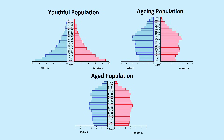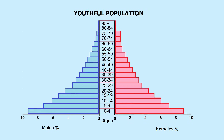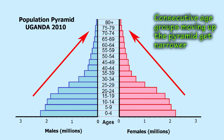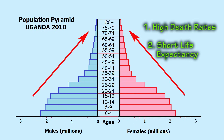There are three main population pyramid shapes. Less economically developed countries typically have a youthful growing population. The country represented on this pyramid has a high birth rate, which is shown by the broad base on the pyramid. Each consecutive age group moving up the pyramid gets narrower due to the higher death rates and a short life expectancy.